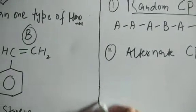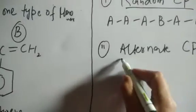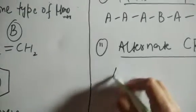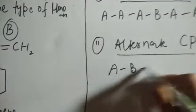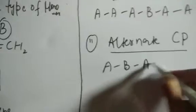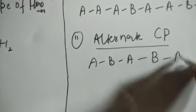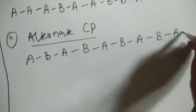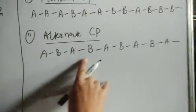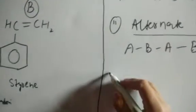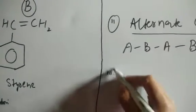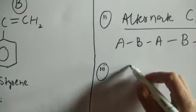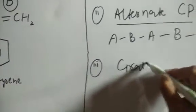The second category is the alternate copolymer. Here the monomers are alternately arranged: A, then B, then A, then B, then A, then B. The monomers are alternately arranged in the polymeric chain, so it is called an alternate copolymer.